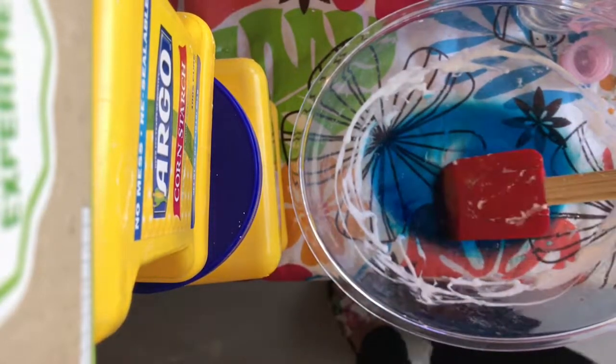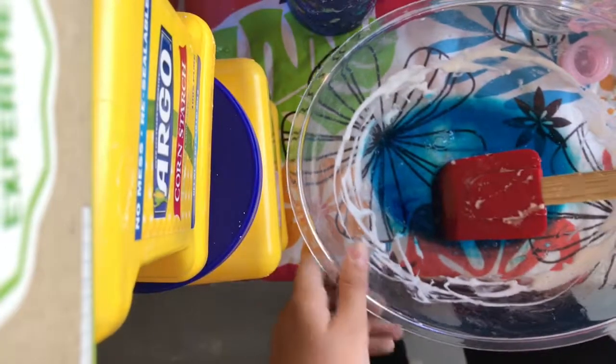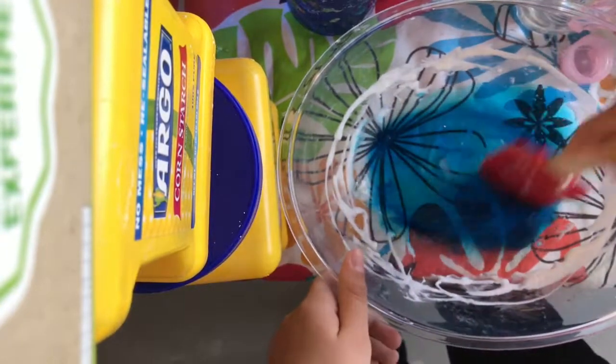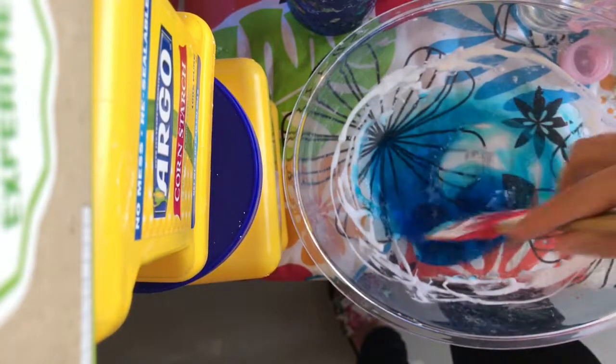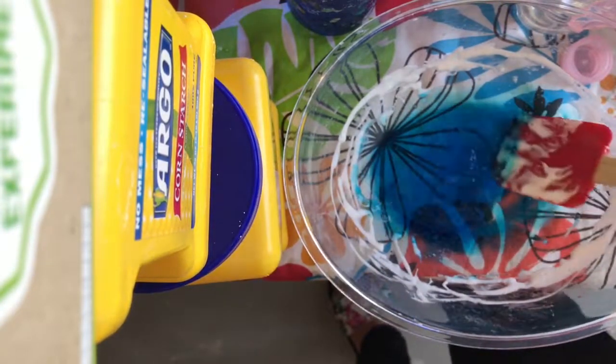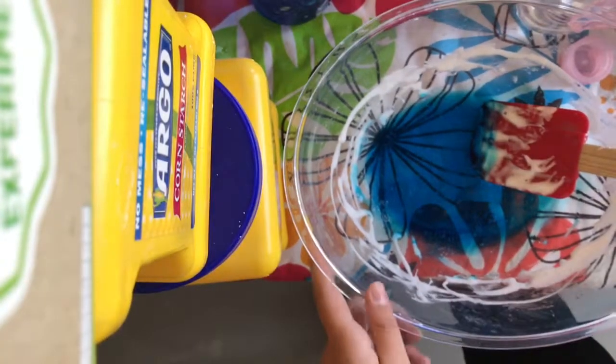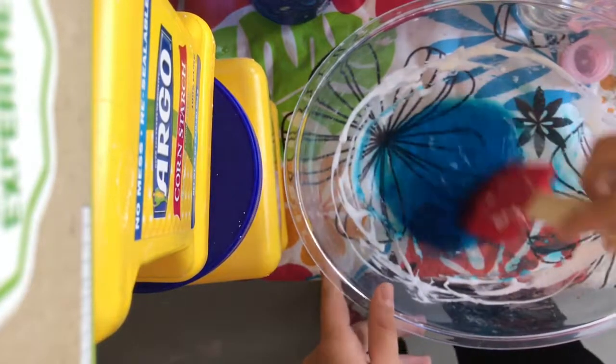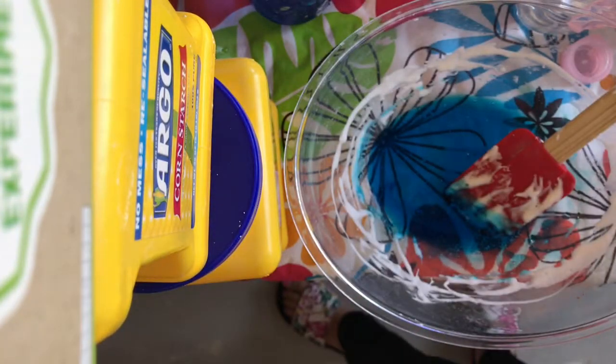So I'm just going to use some borax activator to activate this. I'm not going to use so much right now because I obviously still want to add the pebbles. It's so cool when it first starts forming. This is so pretty actually, wow, this is really pretty. I'll just make like a regular blue slime. Just a little bit more because I want it to still be sticky enough for the pebbles.